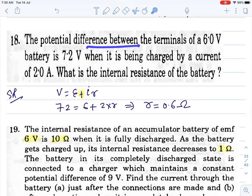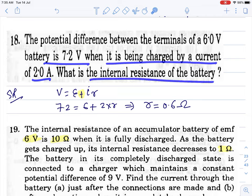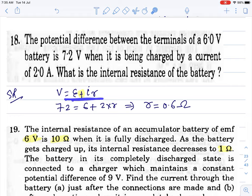The potential difference between the terminals of a 6V battery is this much when it is being charged by a current of this much. What is the internal resistance of the battery? During charging, it's plus. Terminal potential equals EMF plus IR. During charging, terminal potential increases as compared to EMF.